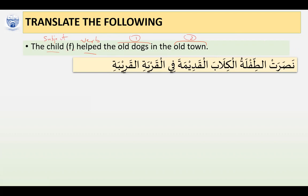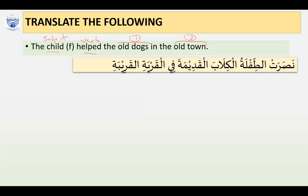We realize that the child is feminine, so what we need is a feminine verb. The feminine verb is 'Nasarat.' The word for child — Tiflun — becomes Tiflatun; it takes the Ta Marbuta. It takes the Ta Marbuta because we have a feminine subject, so the verb is placed into its feminine singular form.